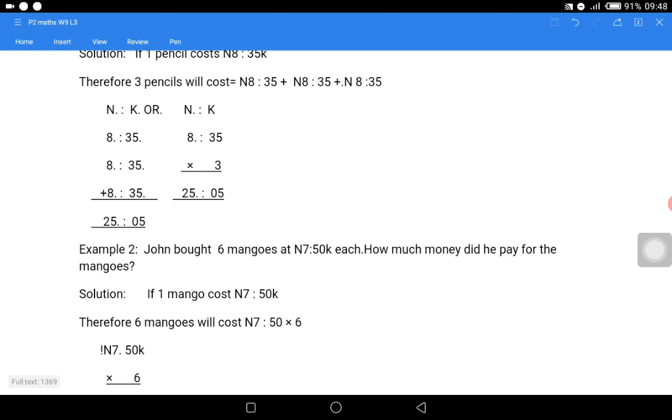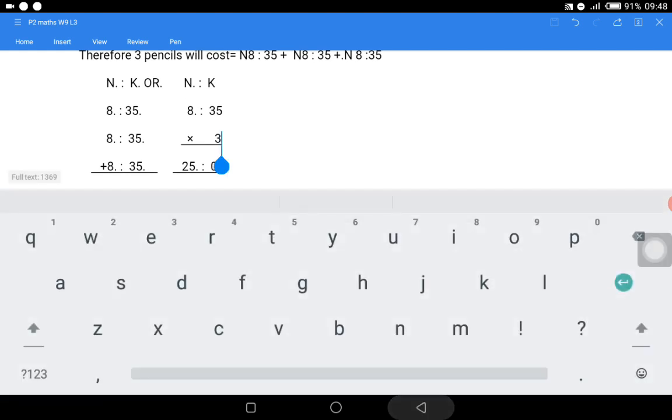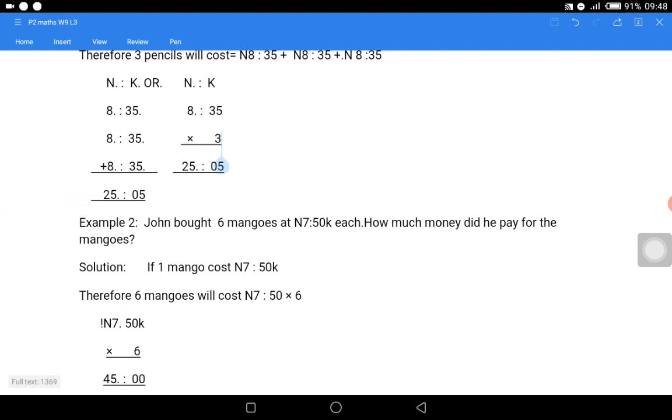You write the value N8.35k in three places and add everything together. Then if you want to make use of your multiplication table, you write N8.35k under the kobo column, then multiply it by three. Let us look at that multiplication method first.